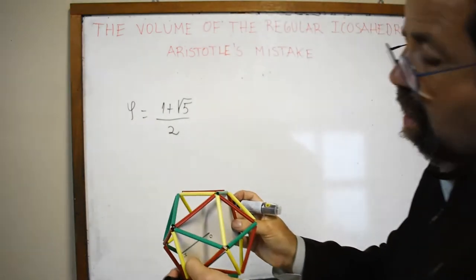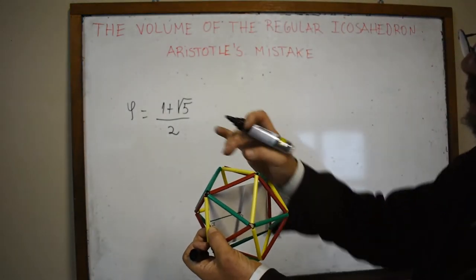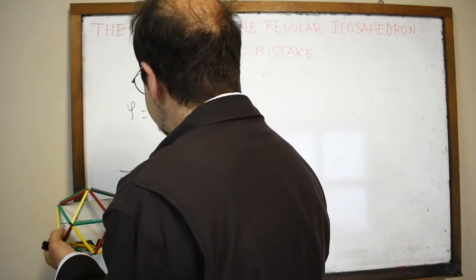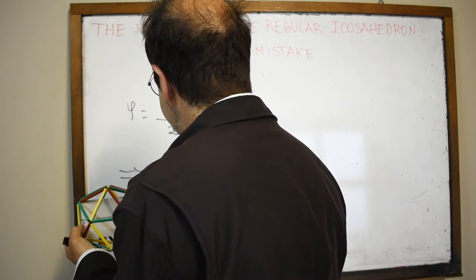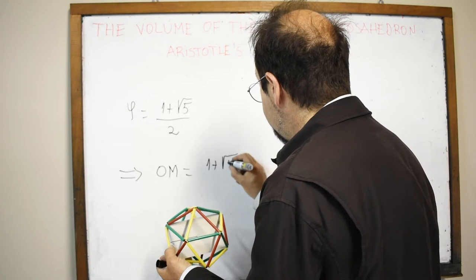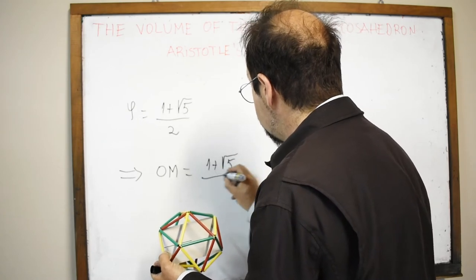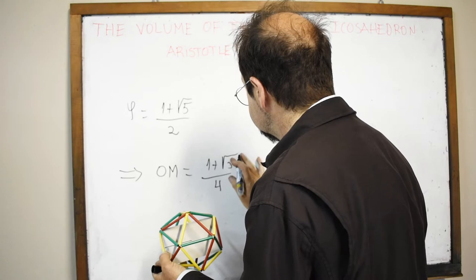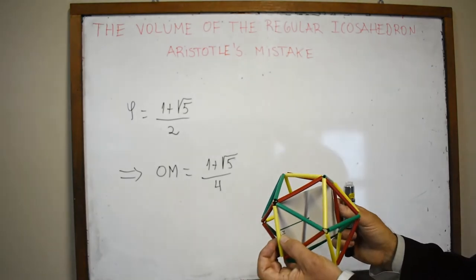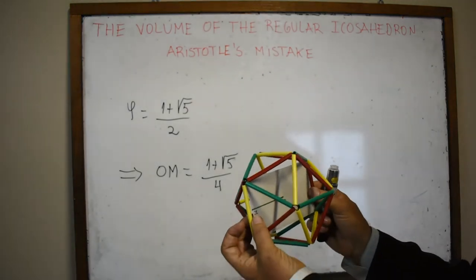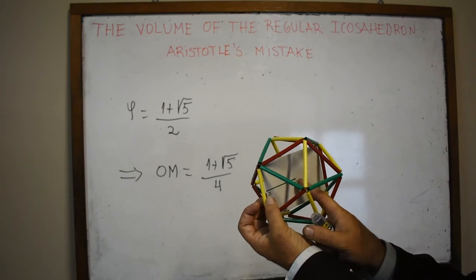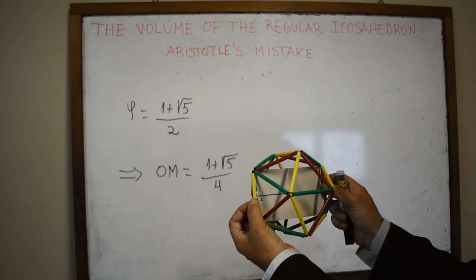The golden number is (1 + √5) / 2. So OM is half of the length of the long side, which means OM equals (1 + √5) / 4. This represents the distance between the center of the icosahedron and the midpoint of an edge.